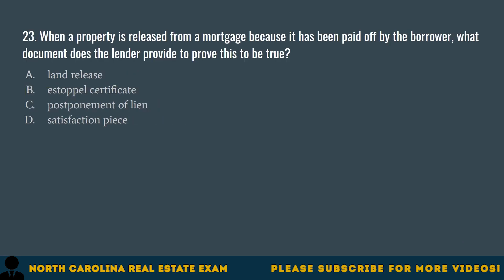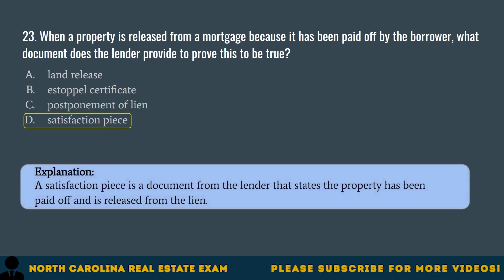Question 23. When a property is released from a mortgage because it has been paid off by the borrower, what document does the lender provide to prove this to be true? A. Land release. B. Estoppel certificate. C. Postponement of lien. D. Satisfaction piece. The correct answer is D. Satisfaction piece. A satisfaction piece is a document from the lender that states the property has been paid off and is released from the lien.